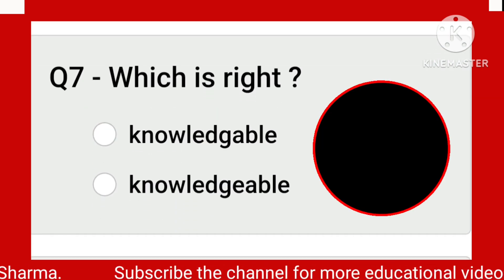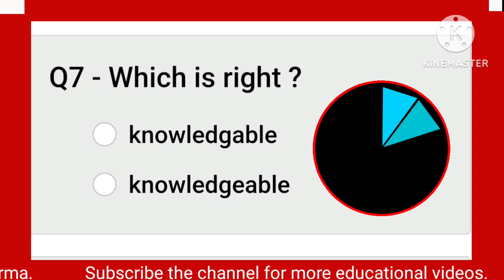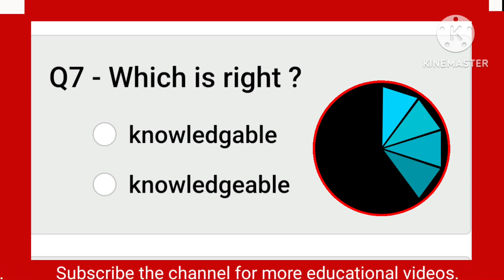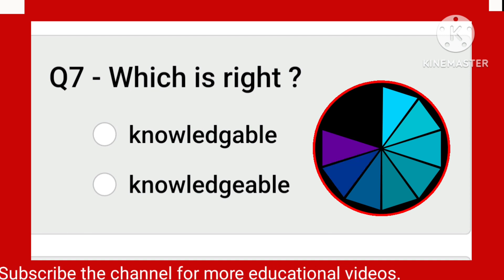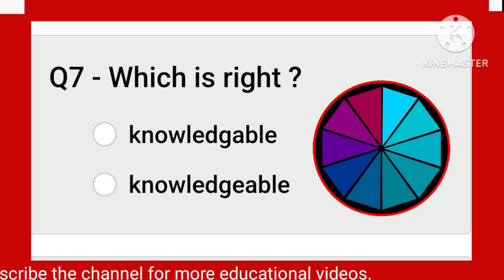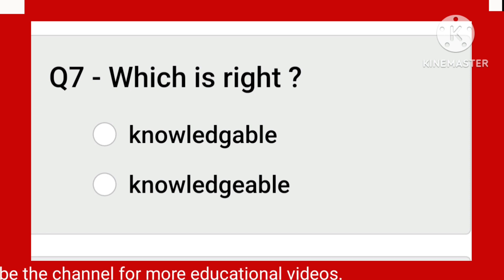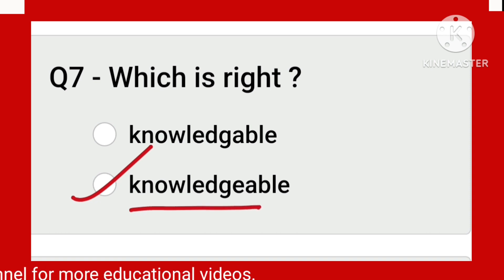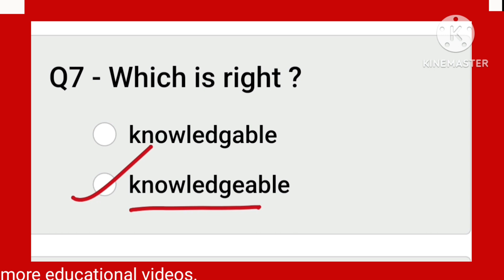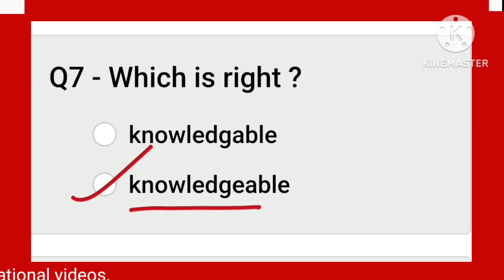Which is right? See the spelling attentively. The second one is correct: Knowledgeable. Keep in mind — first write 'knowledge' fully. As you know, the spelling of 'knowledge' ends in E at the last. So after 'knowledge,' 'able' is added — the E is not removed. So your spelling will be correct.